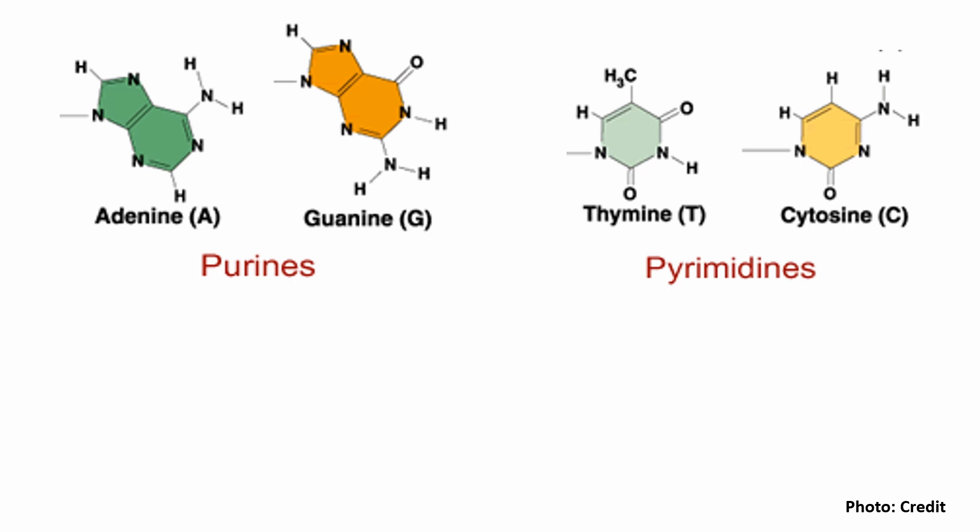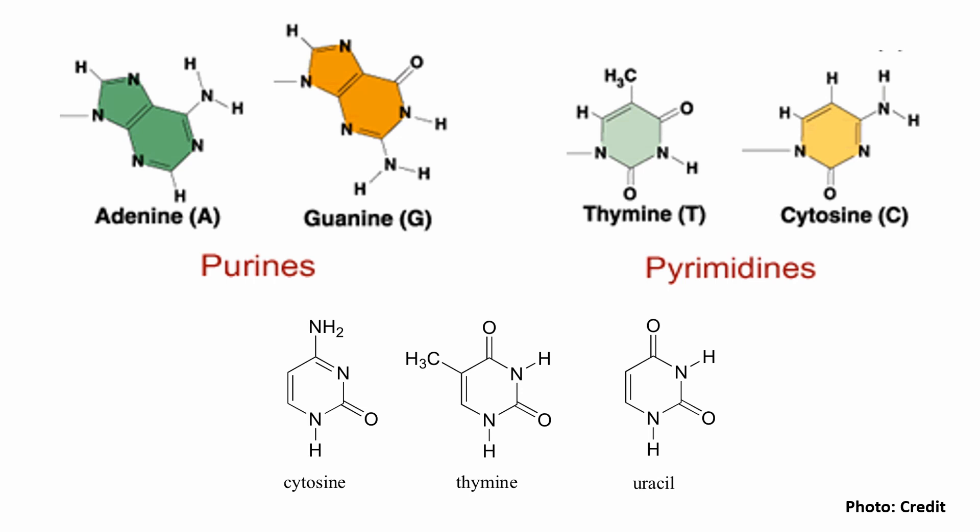Purines and pyrimidines are found in DNA. At carbon number 2, DNA and RNA differ: RNA has an oxygen group at carbon number 2, while DNA does not, using deoxyribose. Ribose sugar contains nitrogen bases — adenine, guanine, thymine, and cytosine. In ribonucleic acid, thymine is replaced by uracil, which is the nitrogen base in RNA.